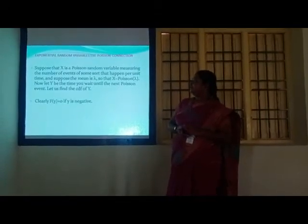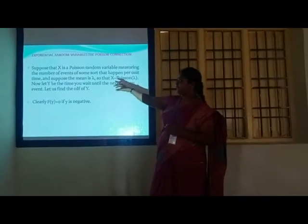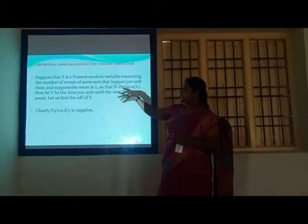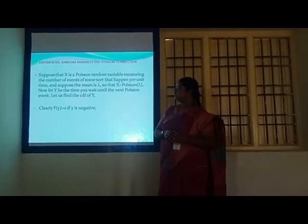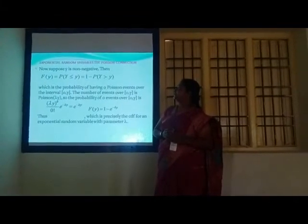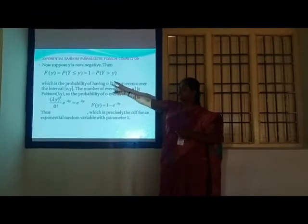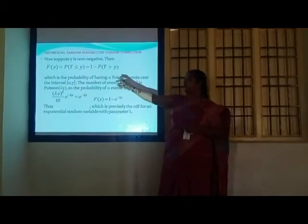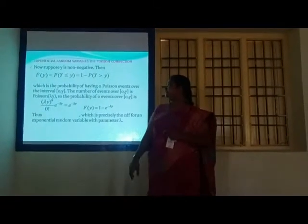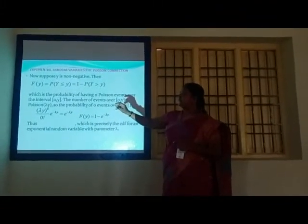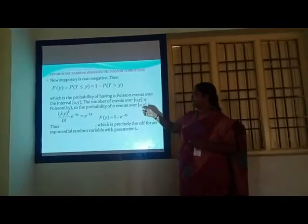Exponential random variables — Poisson connection. Suppose X is a Poisson random variable measuring the number of events of some type per unit time with mean λ, so X ~ Poisson(λ). Now suppose Y is non-negative; then the CDF F(y) = P(Y ≤ y) = 1 − P(Y > y), which is the probability of having 0 Poisson events over the interval (0, y). The number of events over (0, y) is Poisson, so the probability of 0 events over (0, y) is used.